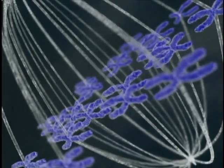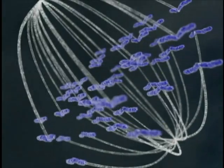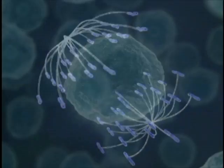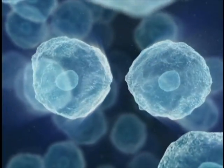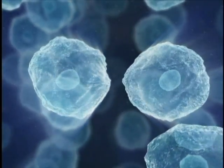If everything is in order, the sister chromatids separate to opposite poles of the cell. The nuclear envelope reforms, and the cell divides into two identical daughter cells.